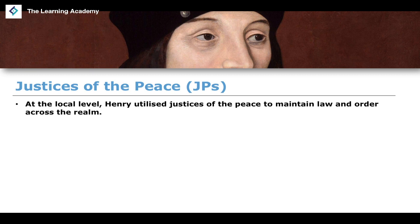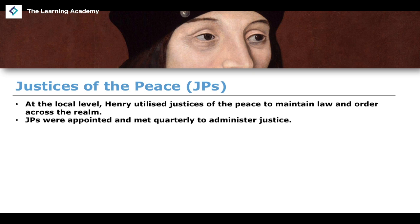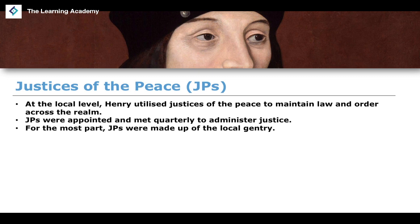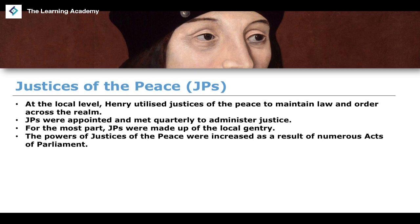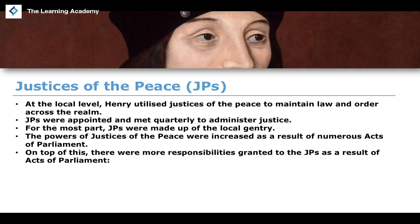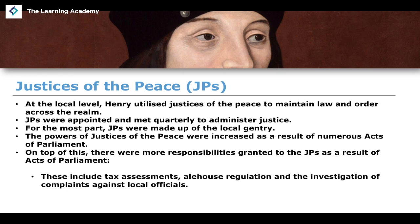Justices of the Peace were used by Henry at a local level to maintain law and order. They were appointed and met on a quarterly basis — every three months — to administer justice across the realm. They were made up largely of the local gentry. Their powers were increased by acts of parliament, and additional responsibilities were granted to them including tax assessments, alehouse regulation, and the investigation of complaints against local officials.